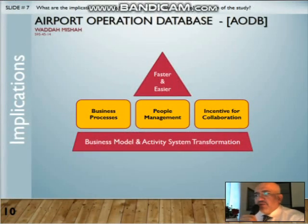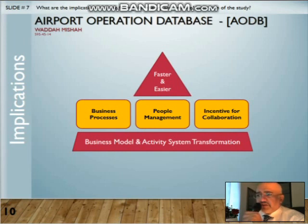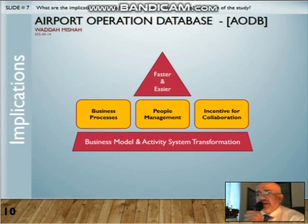Regarding implications: in order to make business model and activity systems transformation faster and easier, the organization's internal capability to reconfigure business systems and redeploy resources rapidly should focus on three things: business process operations and resource allocation, people management approaches and mechanisms, and incentives for collaboration. The case in review has several limitations. As with any qualitative research, collection of qualitative data is generally more time-consuming, and it is difficult to generalize delivered results if stakeholders give widely differing, highly subjective responses.